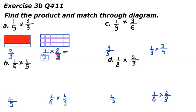Now we will multiply the numerators. One times two gives us two. And five times three gives us 15.